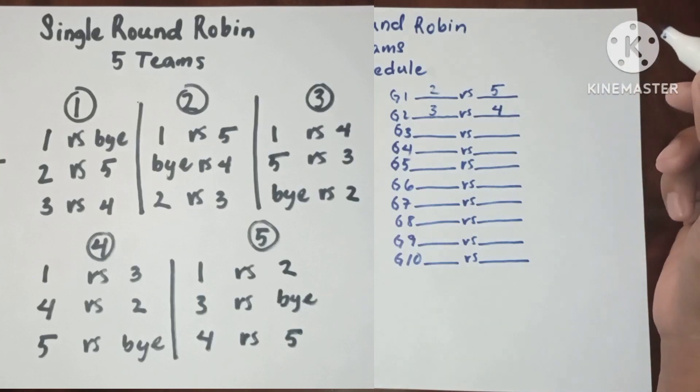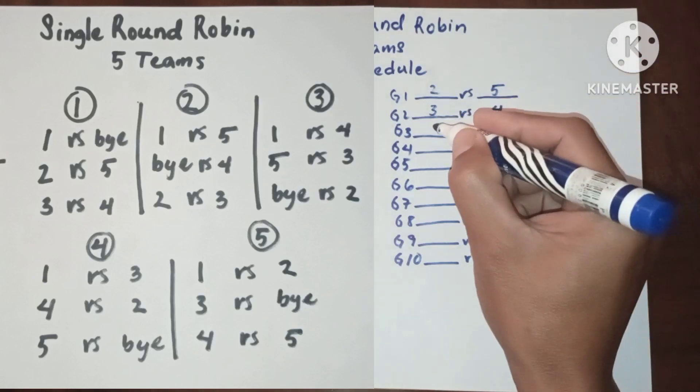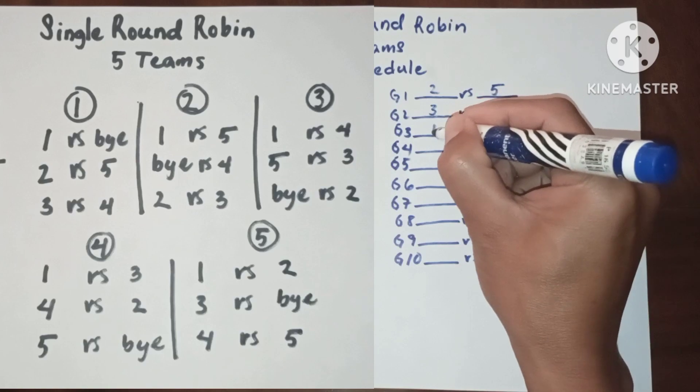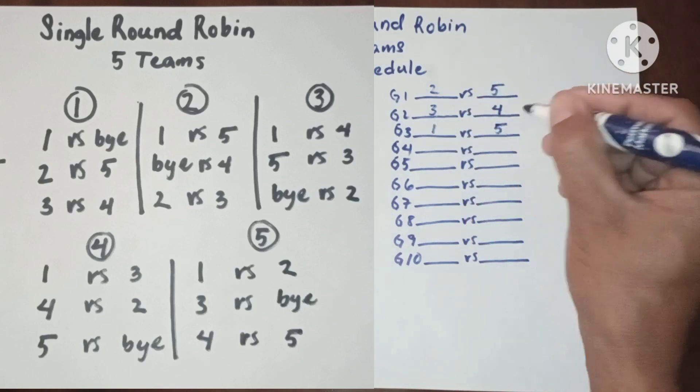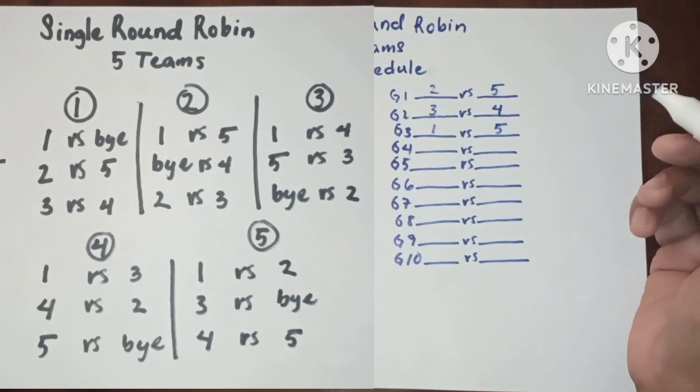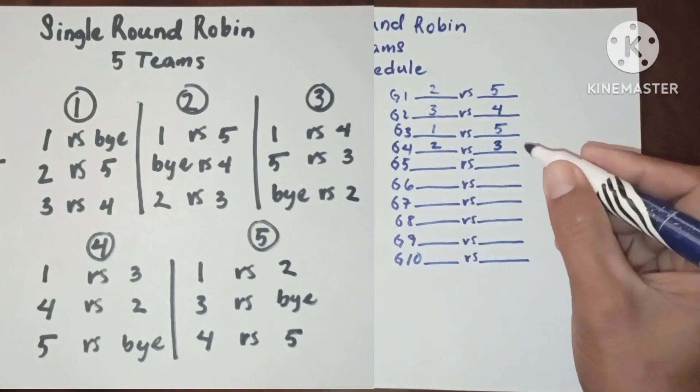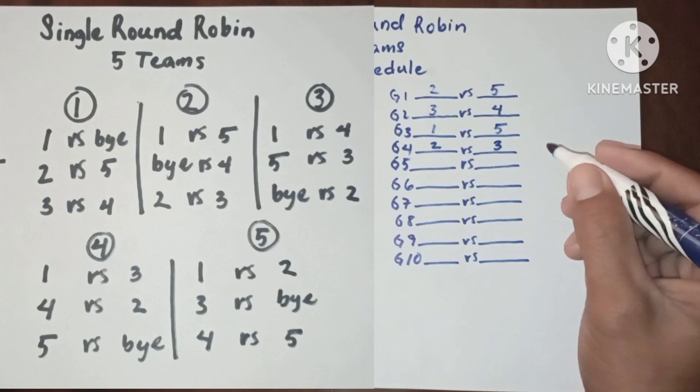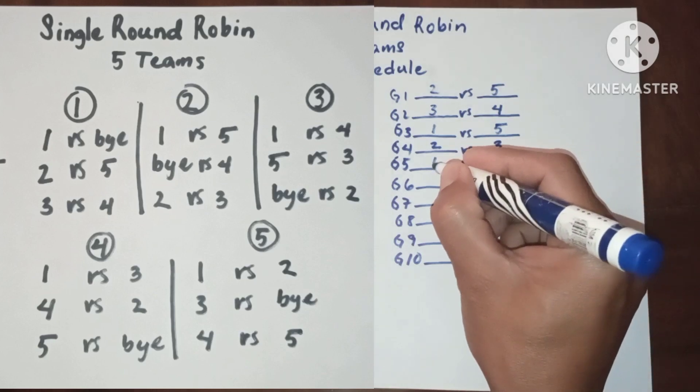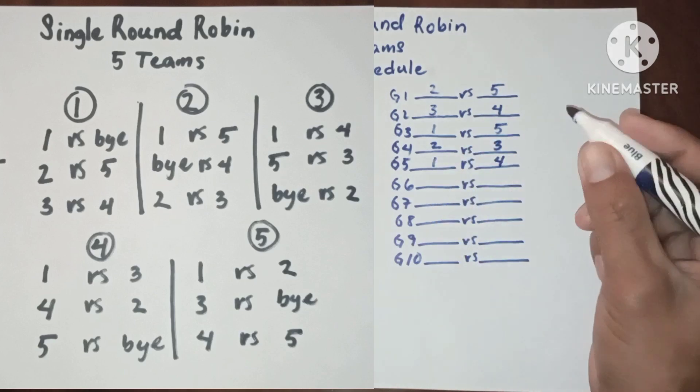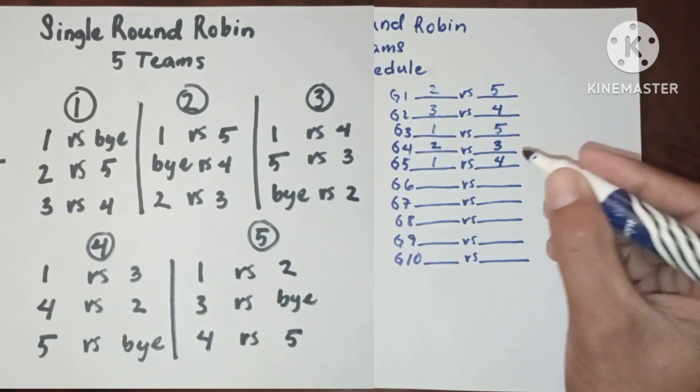In round two we have one versus five, two versus three. In round three we have one versus four, five versus three.